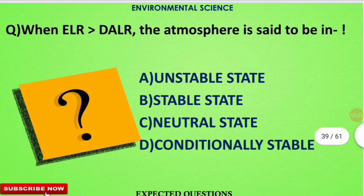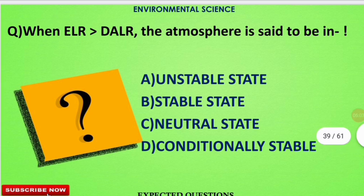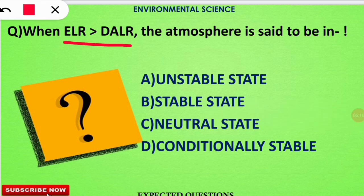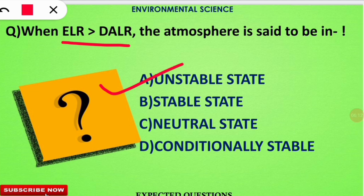The next question is: when the ELR (Environmental Lapse Rate) is greater than the dry adiabatic lapse rate (DALR), the atmosphere is said to be in what state? In this case, when the ELR is greater than the DALR, the atmosphere will be in an unstable state.